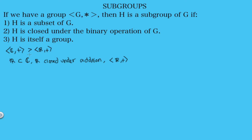Similarly, the set of rationals with addition is also a subgroup of the real numbers. Since it's a subgroup of the real numbers, it must also be a subgroup of the complex numbers. And the set of integers is a subgroup of the rationals. We could continue and actually find an infinite number of subgroups. For example, the subgroup of the even integers — written as 2ℤ with addition — is a subgroup of the integers, and of course a subgroup of the complex numbers.